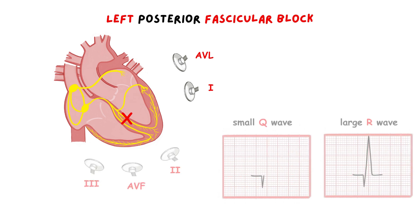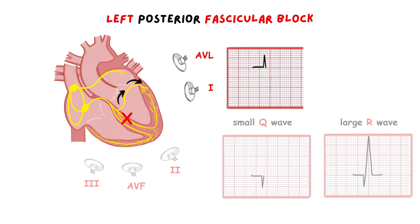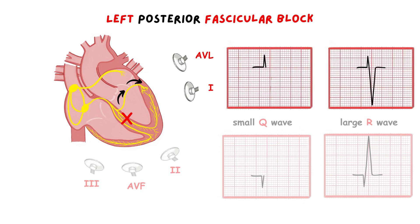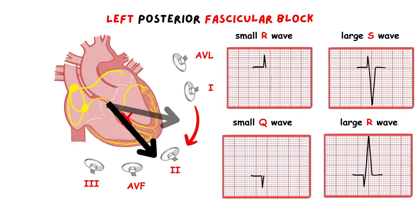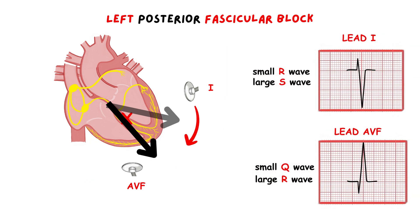If we observe from the point of the lateral leads, we have the opposite. Initially the impulse travels towards them, which is recorded as a positive wave, then followed by a large negative wave because the impulse travels away from them. So we have a small R wave and a large S wave in the lateral leads. According to the net direction of the depolarization wave to the right, we have a deviation in the electrical axis to the right. Also, we have a slightly delayed depolarization of the ventricle because the whole work falls on one fascicle, so we expect a slightly widened QRS complex, but never exceeding more than 0.12 seconds. The main criterion for left posterior fascicle block is an ECG pattern of right axis deviation.